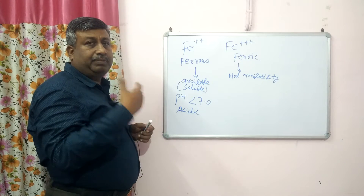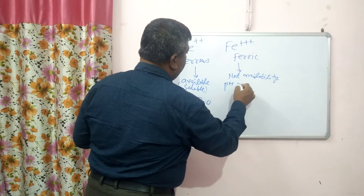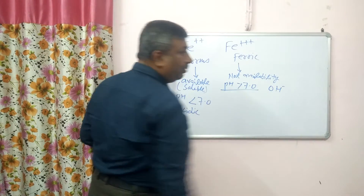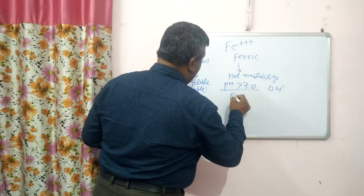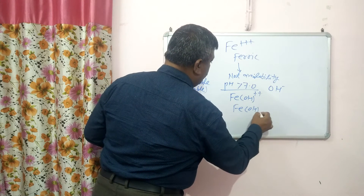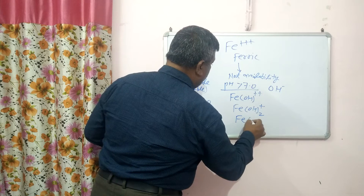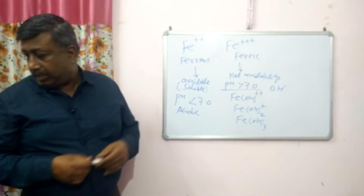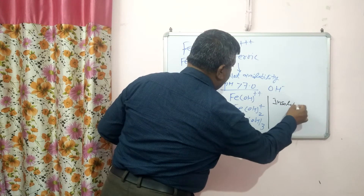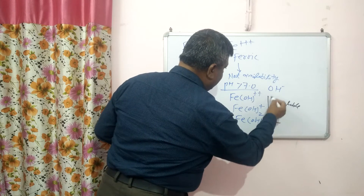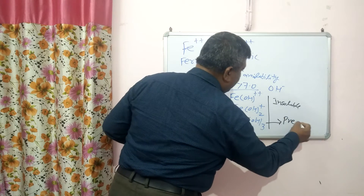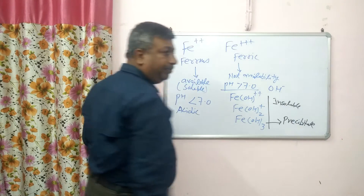As pH is increased above 7, alkaline conditions prevail, and hydroxyl ions dominate over hydrogen ions. Hydroxyl species then form iron hydroxide compounds: Fe(OH)²⁺, Fe(OH)₂⁺, and Fe(OH)₃. These ferric hydroxide forms are insoluble. Solubility is reduced as this hydroxide formation takes place, and this ferric hydroxide precipitates out of soil solution and is not available to the plant.